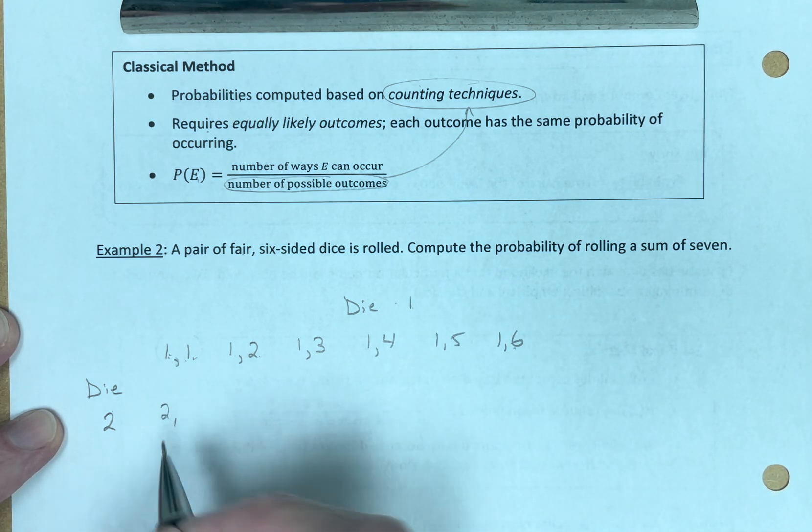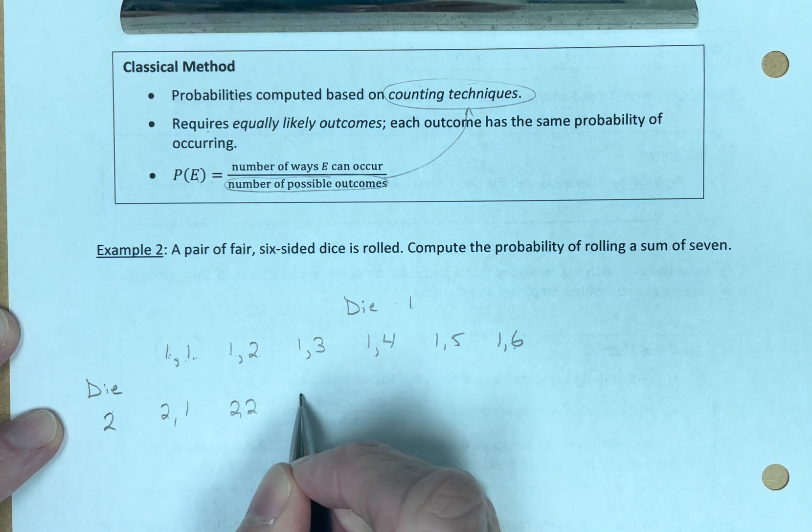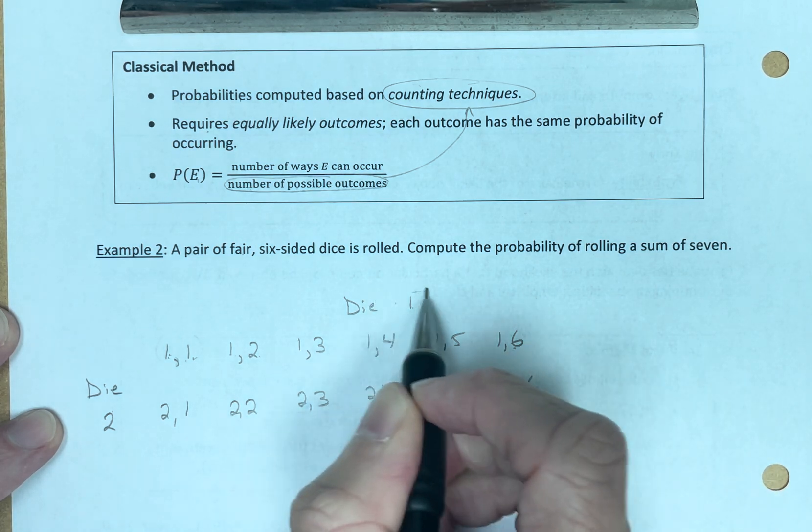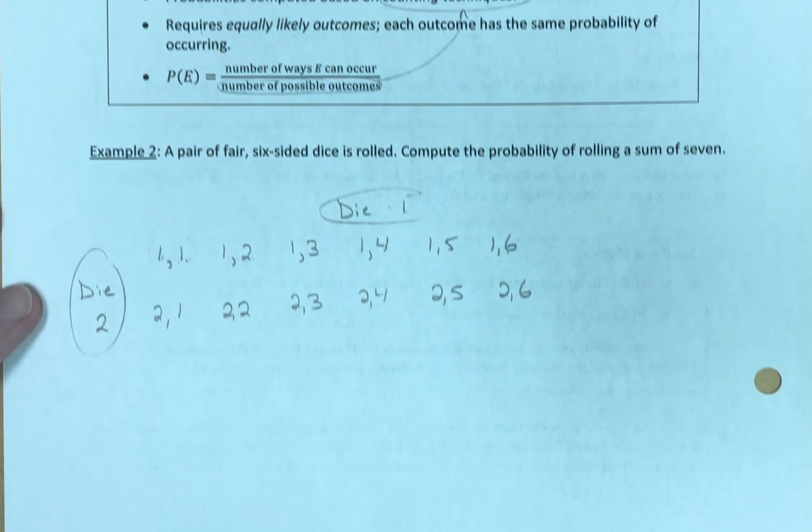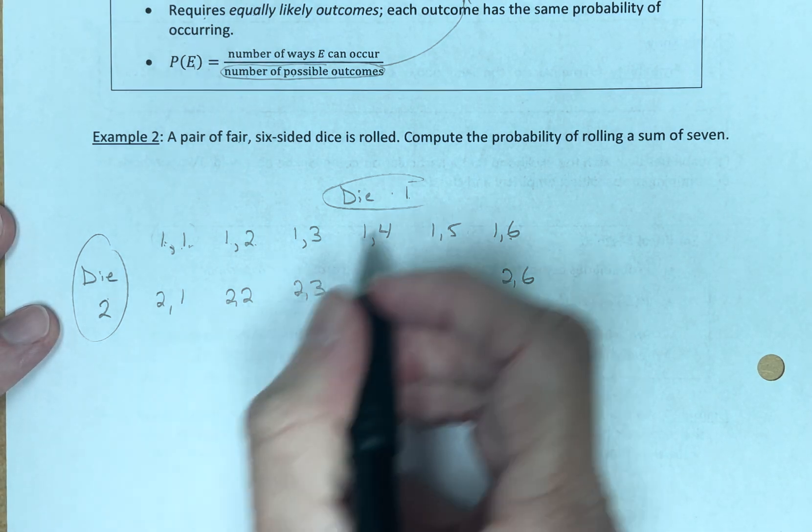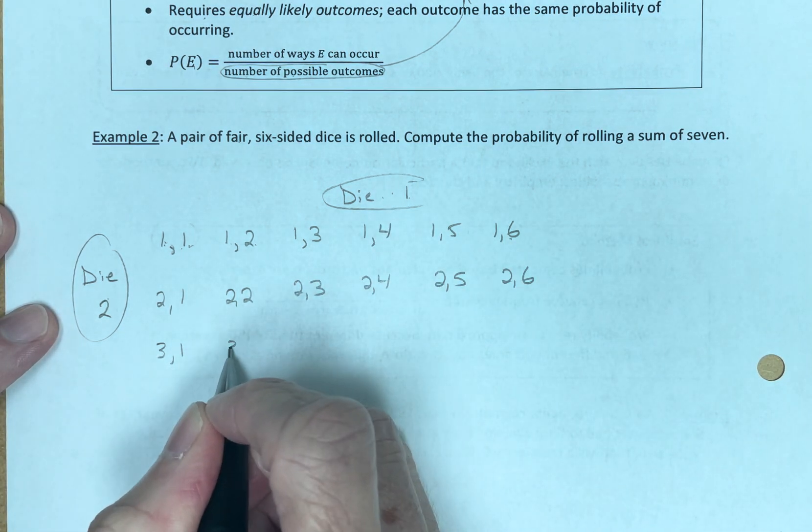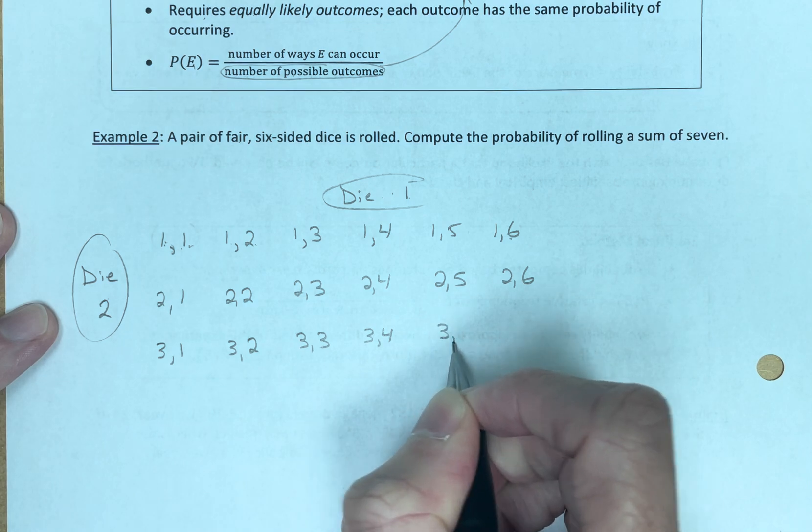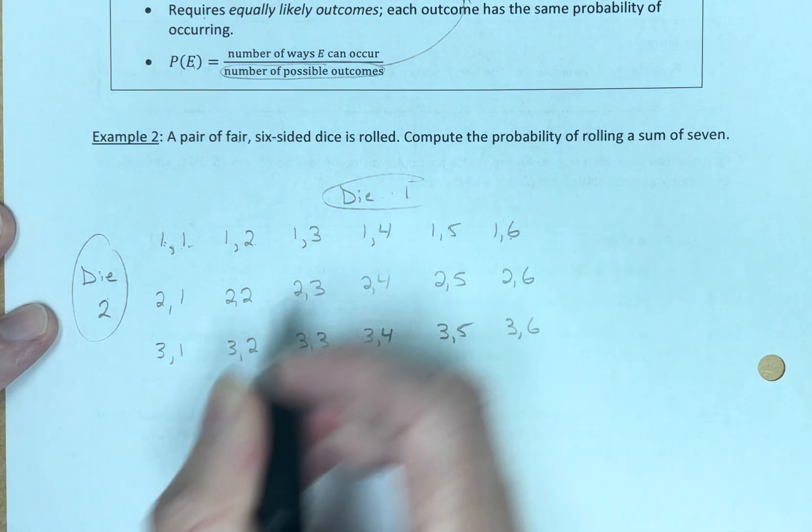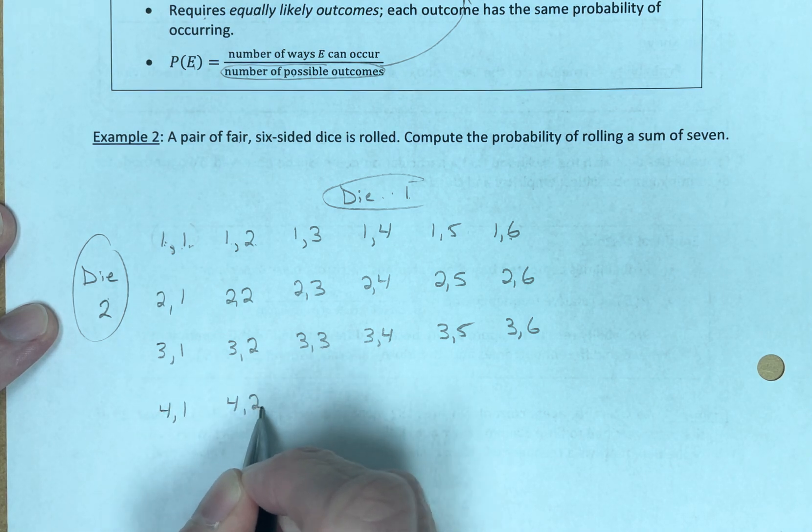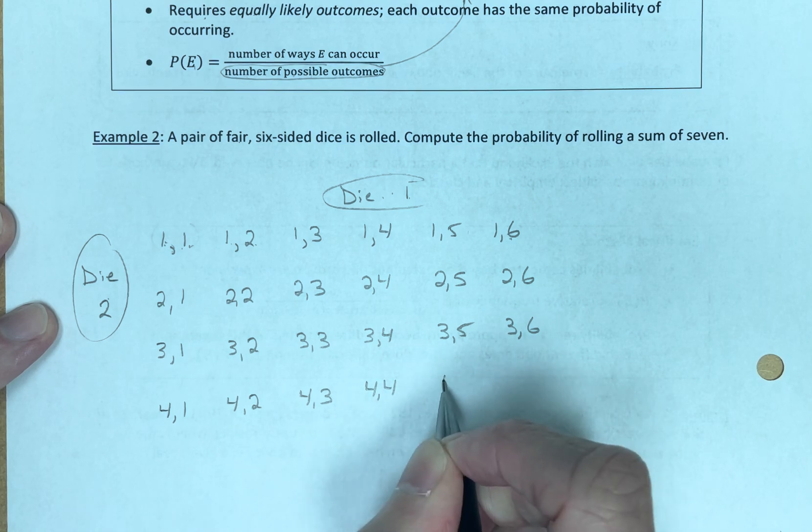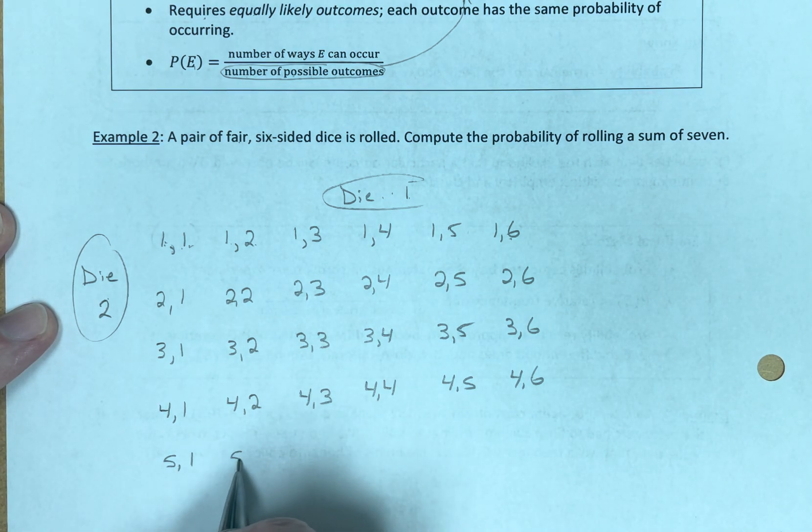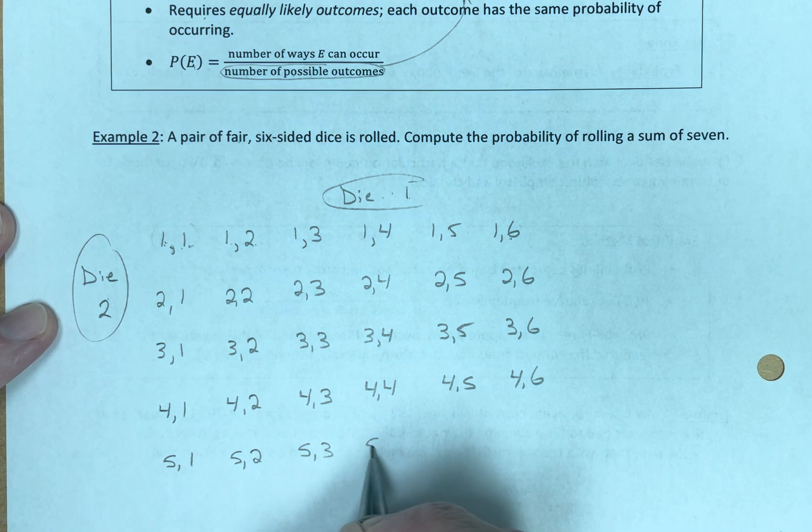Or, my first die could now be a two, and my second die could be a one through six. Continuing, I'm going to put them all down here so we can see some of the math behind it. My first die could be a three, and my second die can be a one through six. My first die could be a four, and my second die could be a one through six. My first die could be a five, and my second die could be a one through six.